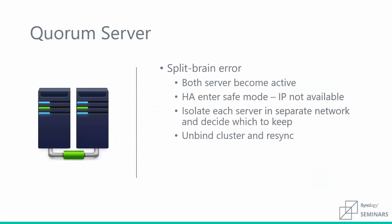One thing to point out is that sometimes a split-brain error can occur. This is basically the two servers becoming disassociated and both thinking they're the active server, which can cause all sorts of problems — for example, multiple different instances of the same data. An easy way to fix this is to disconnect all cables, which automatically puts both units into safe mode. Safe mode blocks the external IP and the IPs of both servers. Once unplugged, you can directly connect your computer to one server, log in, determine which server has the correct version of your data, then unbind the two devices and recreate the cluster.